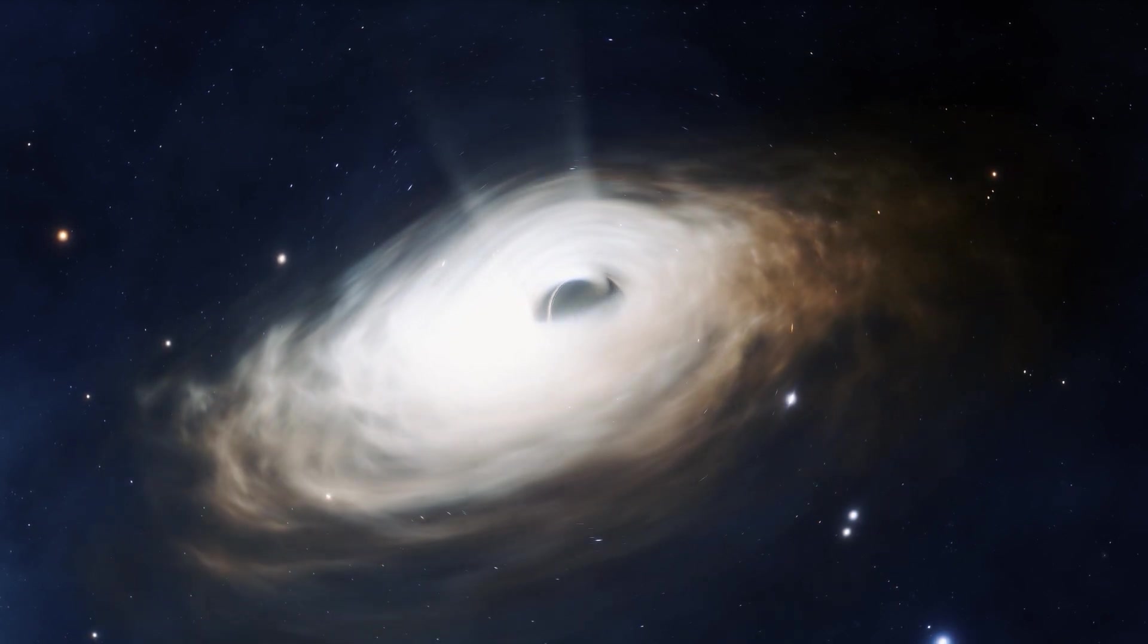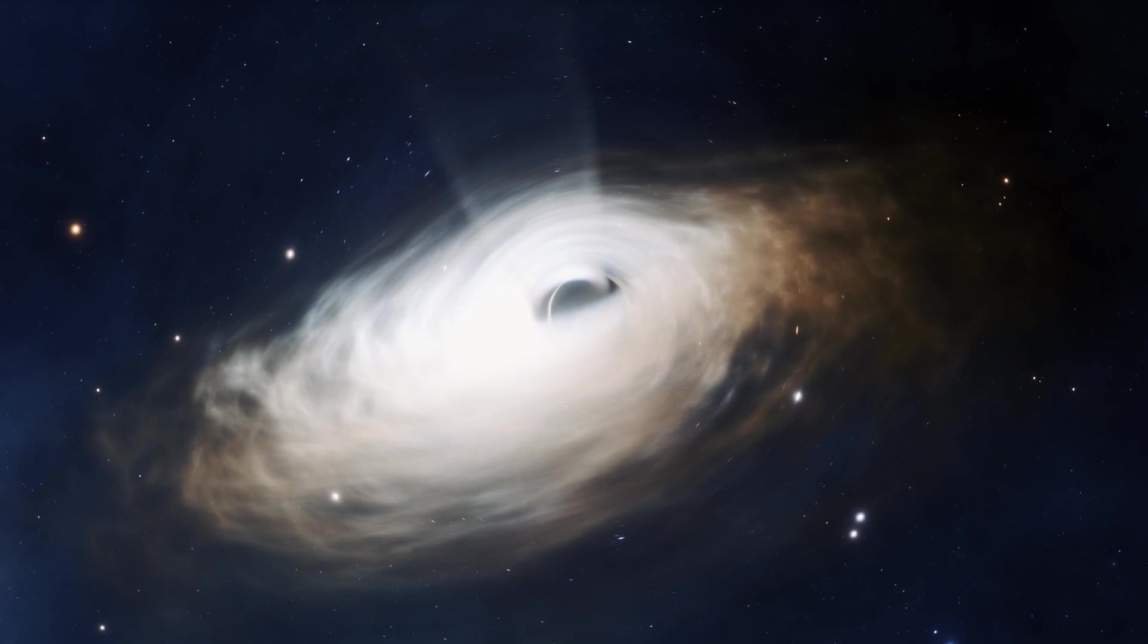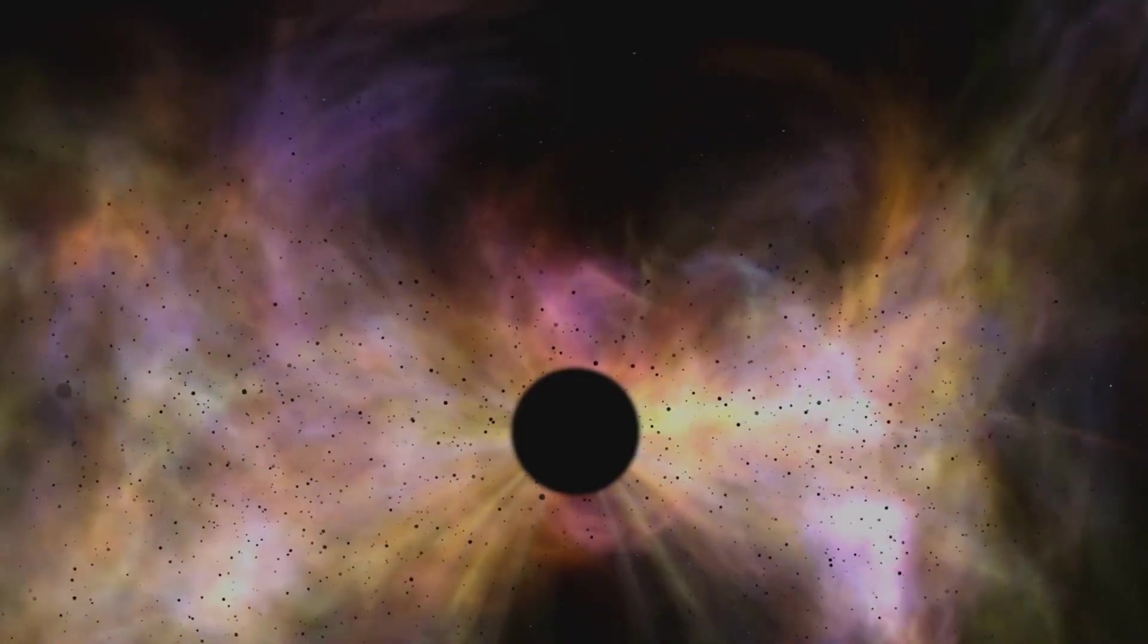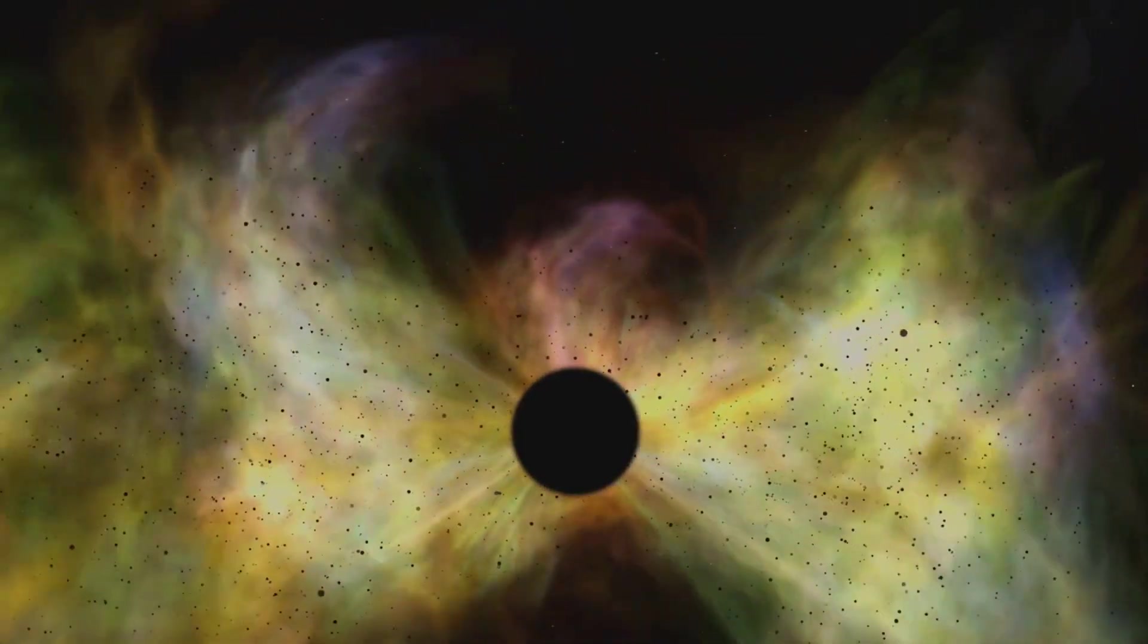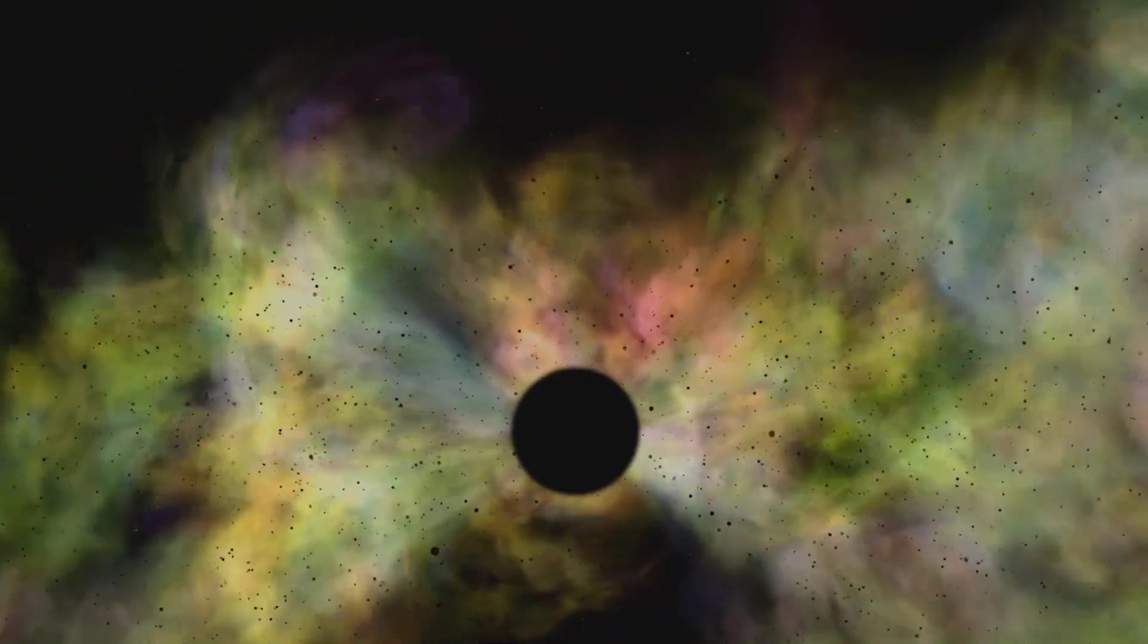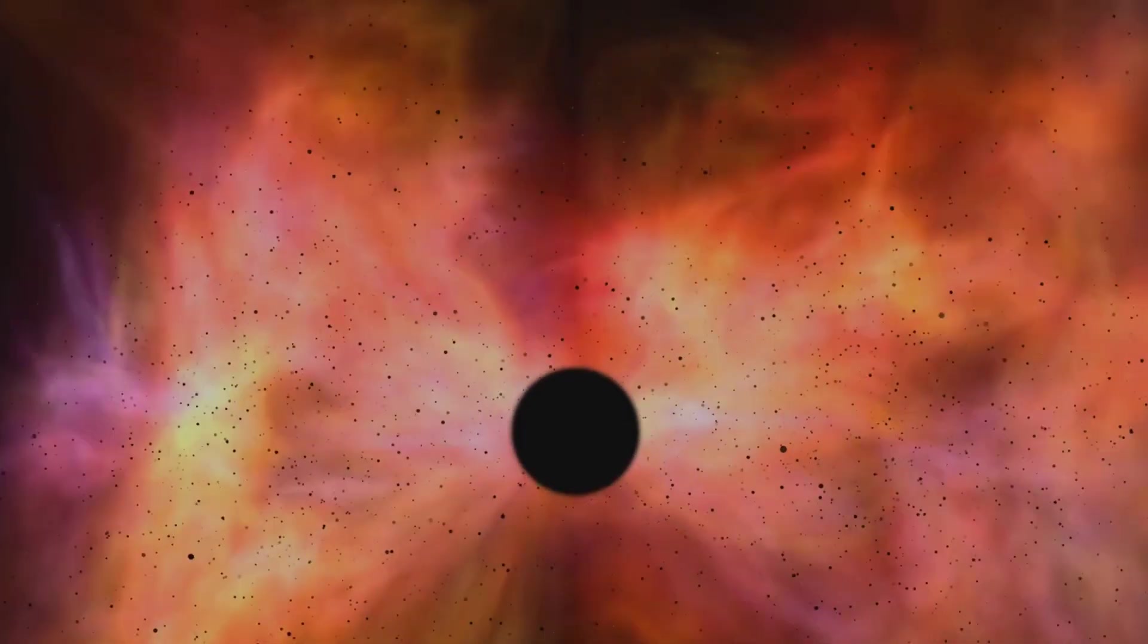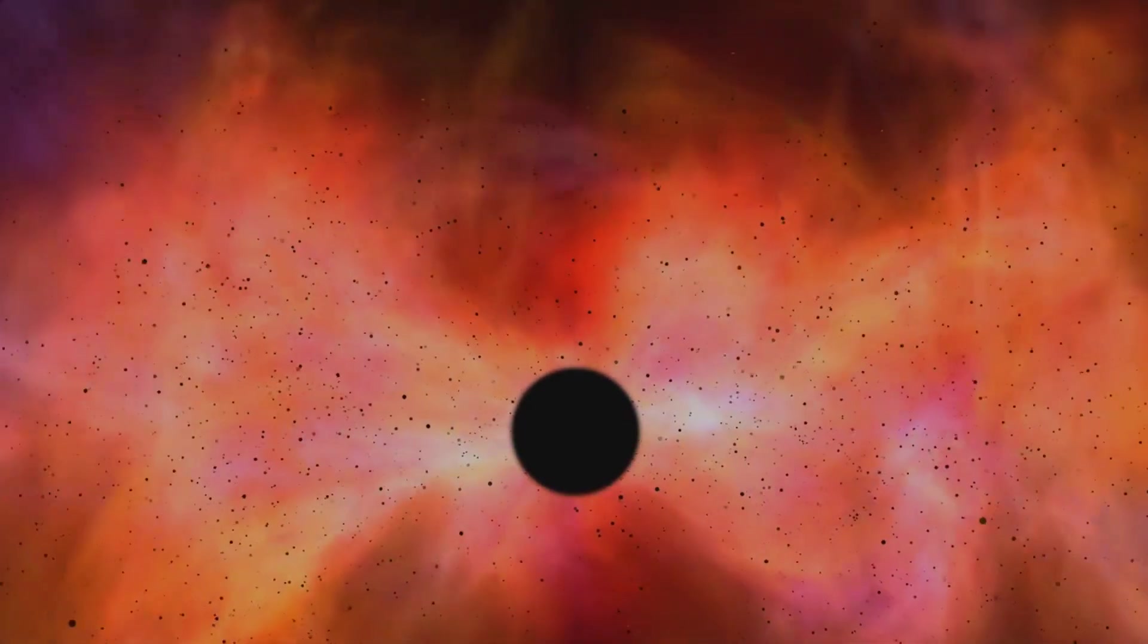Imagine a celestial body of such immense density, of such overpowering gravity, that its pull is inescapable, even for light, the fastest entity in the universe. This is the essence of a black hole, a region of space where gravity is so strong it consumes everything that dares to venture too close.